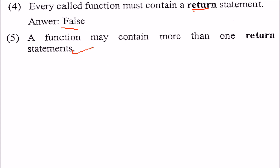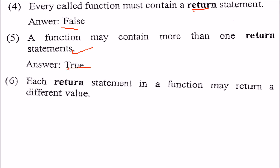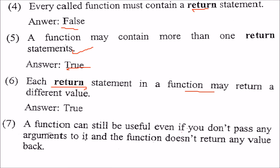A function may contain more than one return statement — yes, absolutely. You can have multiple return statements, but only one is going to execute. Every return statement in a function may return a different value — this is true, that is why you have multiple returns. A function can still be useful even if you do not pass any arguments and it does not return any value — this is also true. So do not judge a function by its return values or parameters.